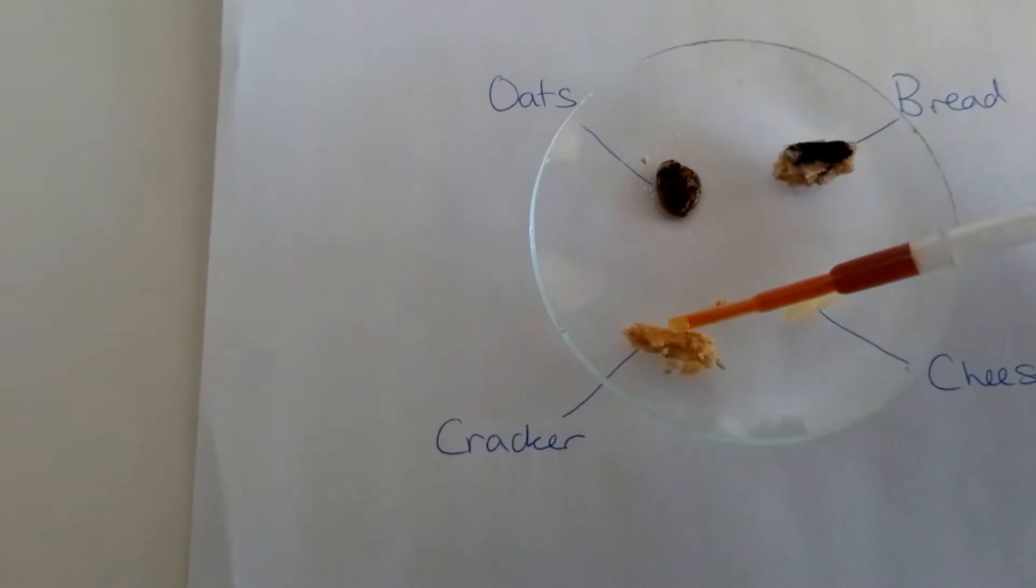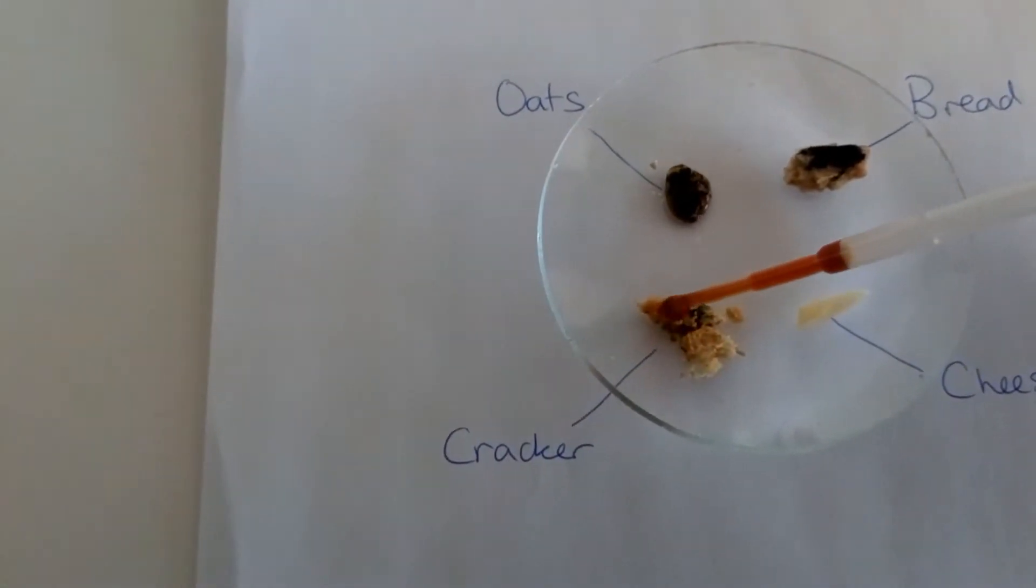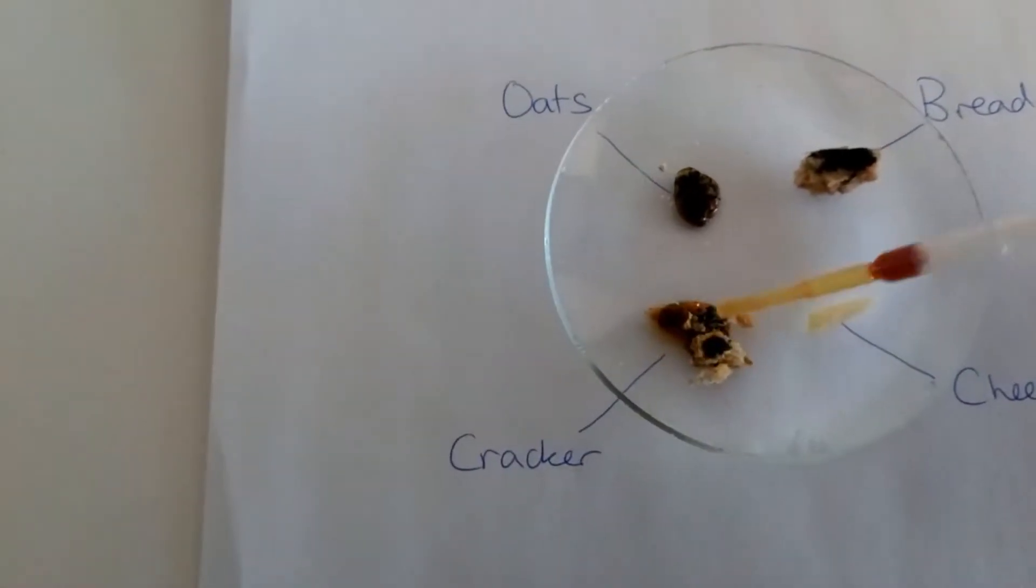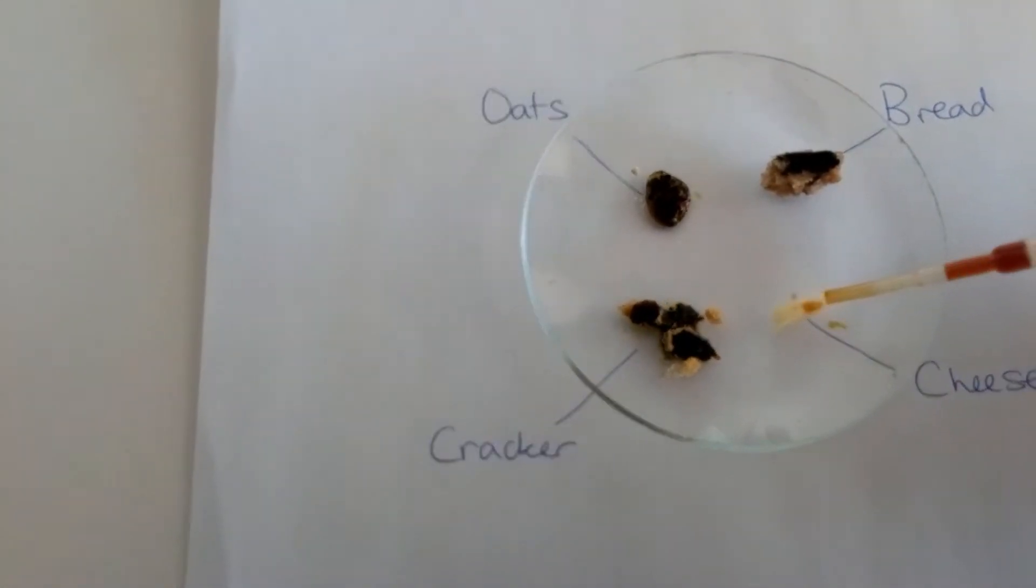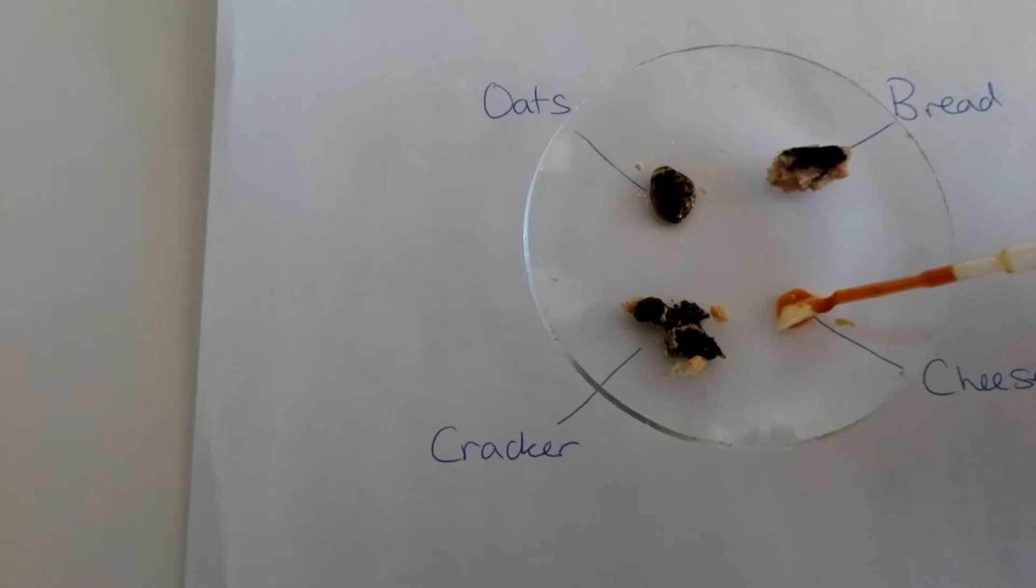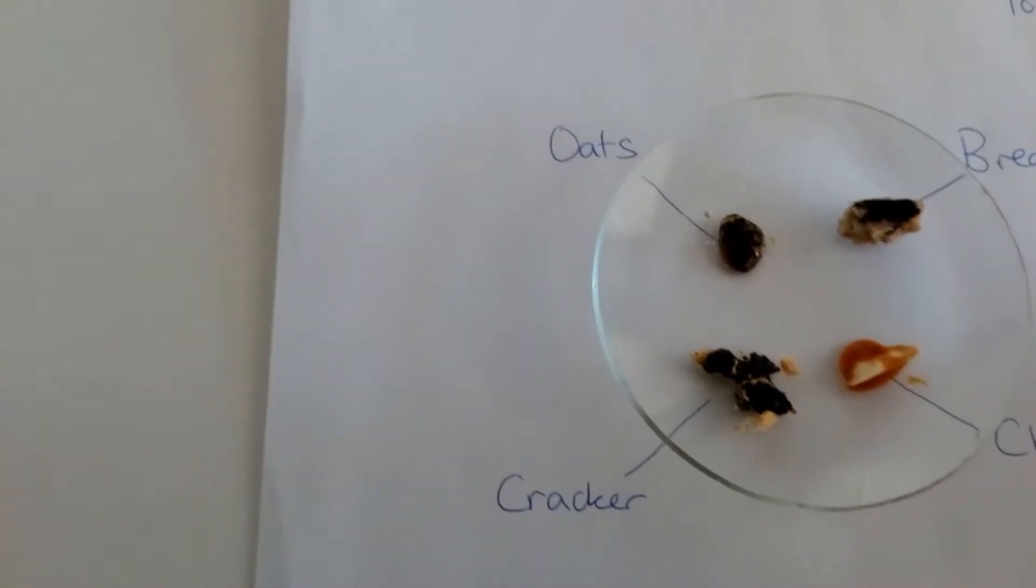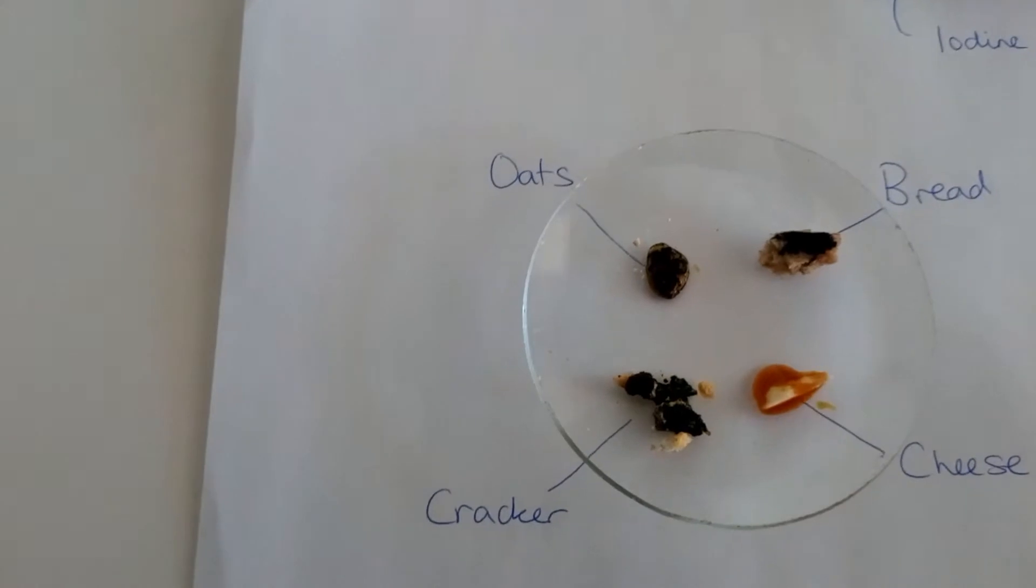We put some on the cracker. Again that's given this black color. And onto the cheese. You'll see that's remained an orange brown color.